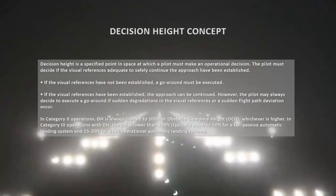Decision height is a specified point in space at which a pilot must make an operational decision. The pilot must decide if the visual reference is adequate to safely continue the approach. If the visual references have not been established, a go-around must be executed. If the visual references have been established, the approach can be continued.